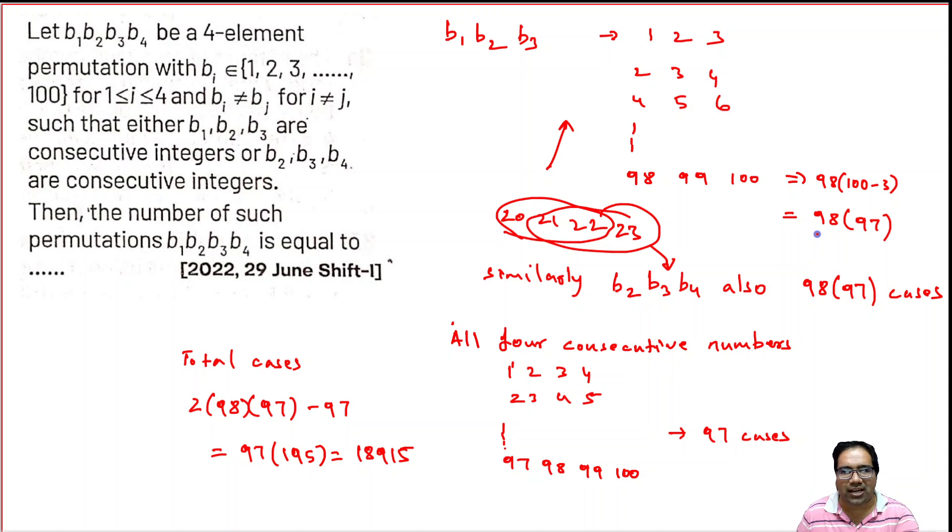So what does that mean? We have to add this and this and subtract this. Basically, 2 into 98 into 97 minus 97, which is nothing but 97 into (2 into 98 minus 1), which is 97 into 195, which equals 18,915. Yes, that is the correct answer.